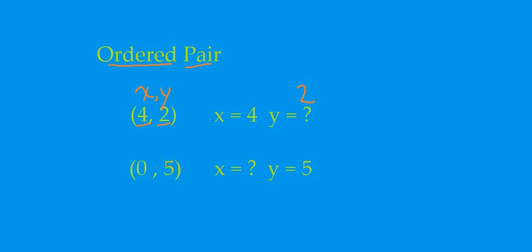So how about this one? 0, 5 means Y equals 5. What's the X value? It's 0.